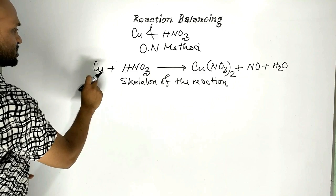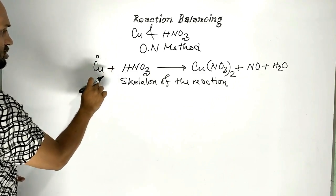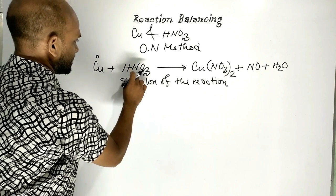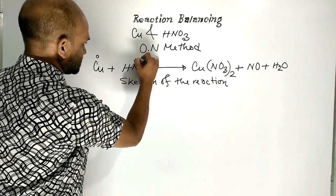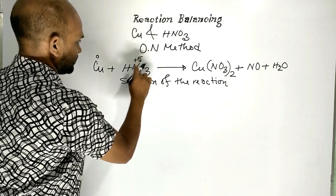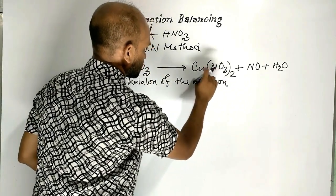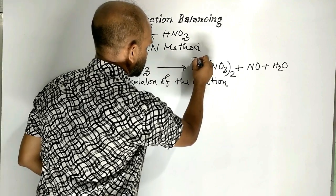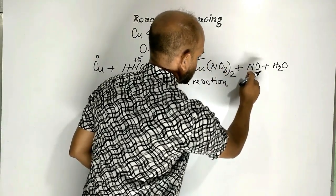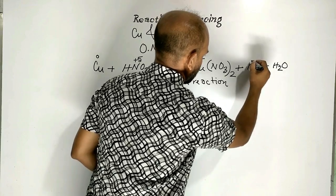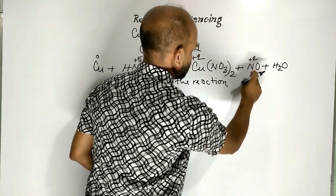Here, the oxidation number of copper is zero, and in nitric acid the oxidation number of nitrogen is plus five. In copper nitrate, the oxidation number of copper is plus two. In nitric oxide, the oxidation number of nitrogen is plus two.